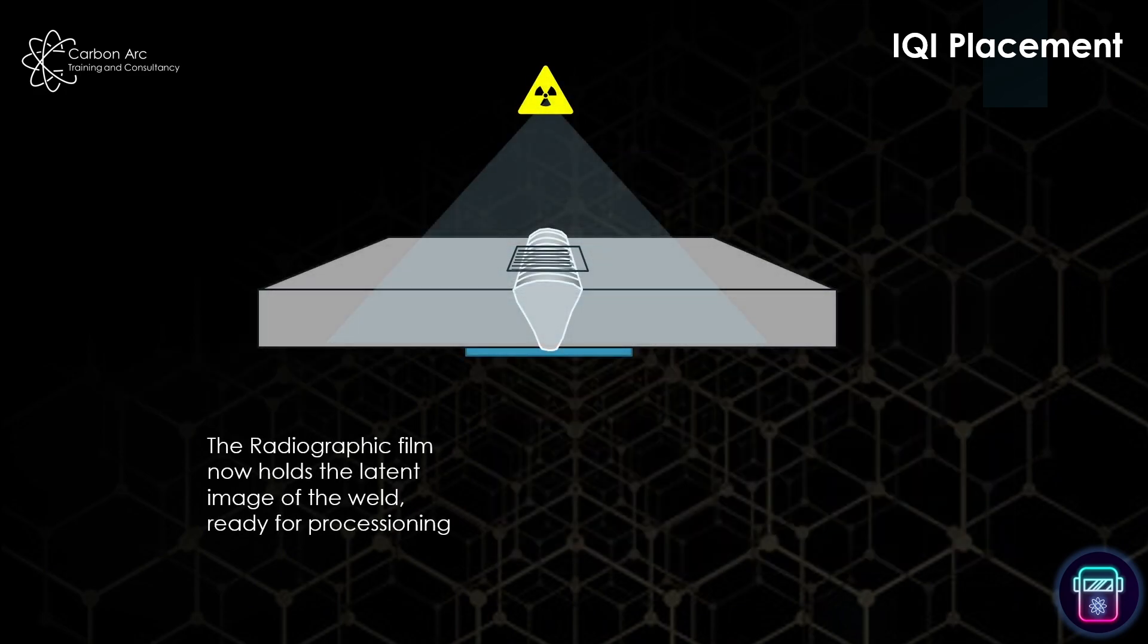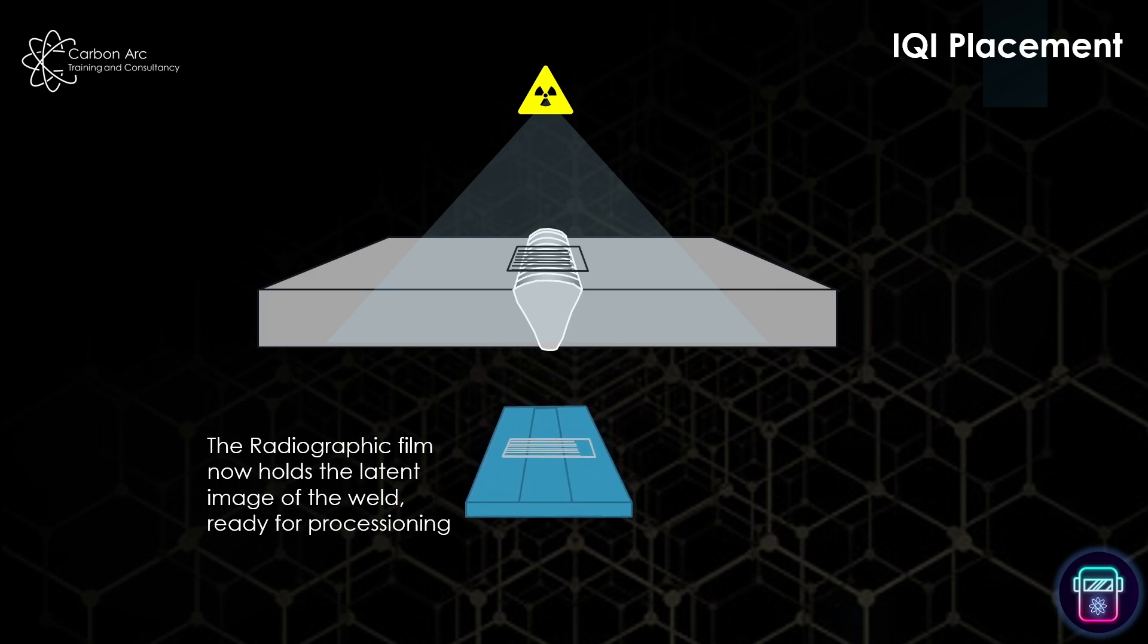So as a standard radiographic setup, there we have, you know, I put my IQI across the weld, I have my source, I make my exposure. And then we pull the latent image onto a film and the IQI will be, you know, a part of that latent image. So when we put it onto the light box, we'll be able to see and count back our wires and show our sensitivity.